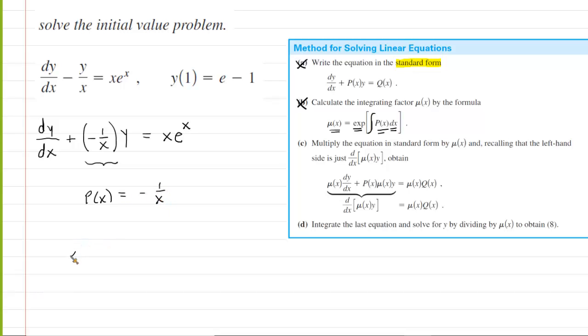Therefore the integrating factor, which we call mu of x, will equal e raised to the integral of negative 1 over x dx. We need to evaluate that integral. Let's do that on the side here. The integral of negative 1 over x dx—we can factor out a negative 1, so you'll have negative integral of 1 over x dx, which is essentially equal to the negative of the natural log of x. That's an old integral from calculus 2.